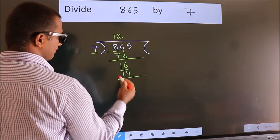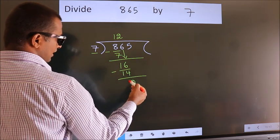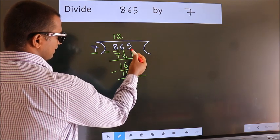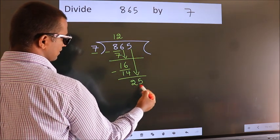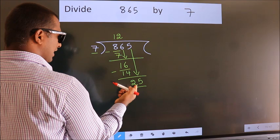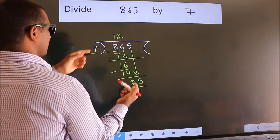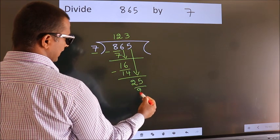Now we subtract. We get 2. After this, bring down the beside number. So, 5 down. So, 25. A number close to 25 in the 7 table is 7 threes, 21.